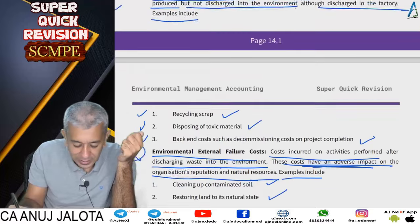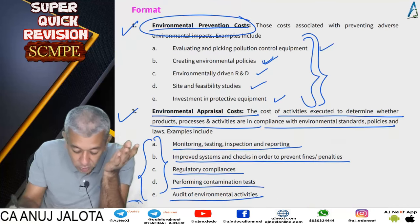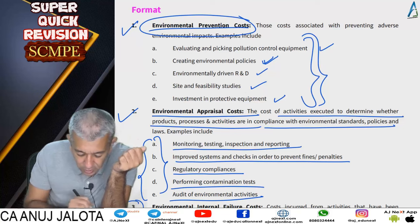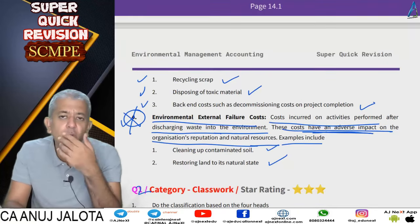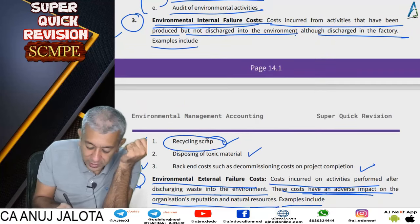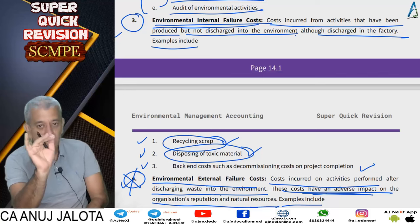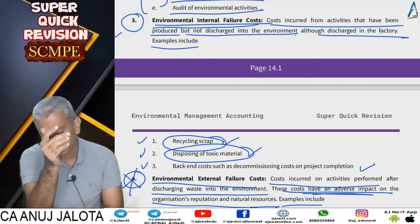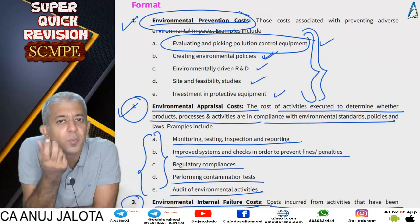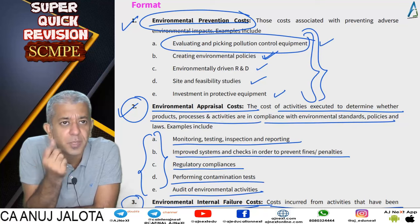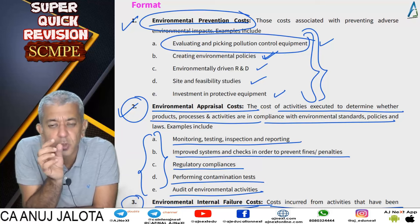If you purchase the best plant and machinery - like spending extra on the premium machine - the amount of waste generated will decrease. As a result, your internal failure costs such as recycling of scrap and disposing of toxic waste will gradually reduce. We mentioned in comments that appraisal cost has also increased, showing the company is becoming more environmentally conscious and reporting more things. Once you start reporting, you automatically become more conscious and try to reduce those costs for future shareholders.